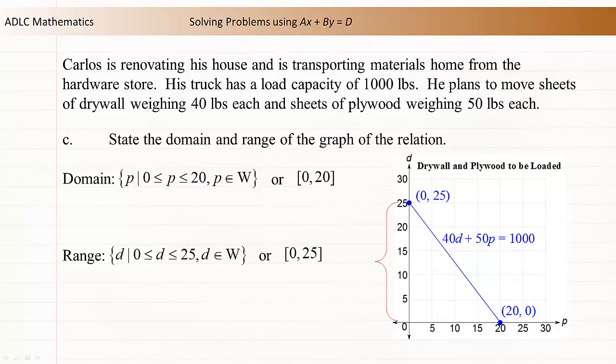Alternatively, we can write the range using interval notation. d lies between 0 and 25, where the lower endpoint is included, and the upper endpoint is included.